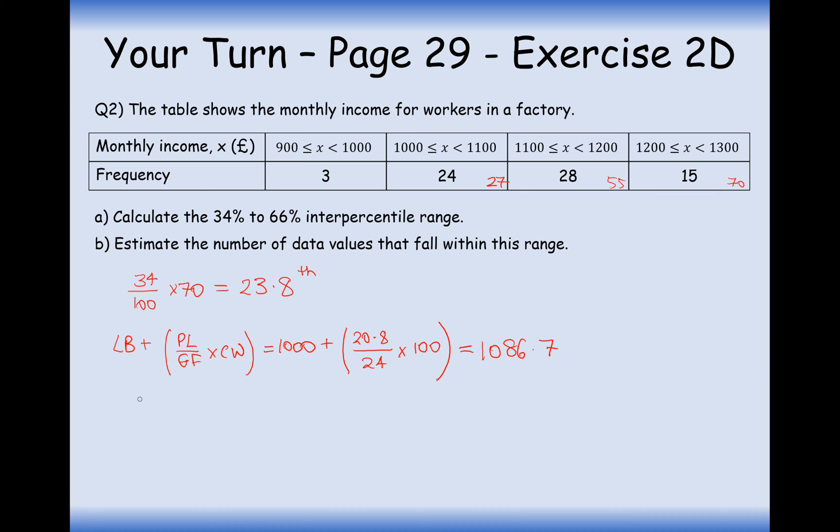And now for the 66th data value. So 0.66 times 70. So you could have either done it the fraction way or the decimal multiply way. 0.66 times 70 data values. That is 46.2. So we're going to look for this data value inside these groups. Now the 46.2 value is definitely going to be in this group here. So applying the calculation here, it's going to be 1,100. Add. Now we've already had 27 data values up until here. So 46.2 take away 27. And we're going to be looking at the 19.2 data value here.